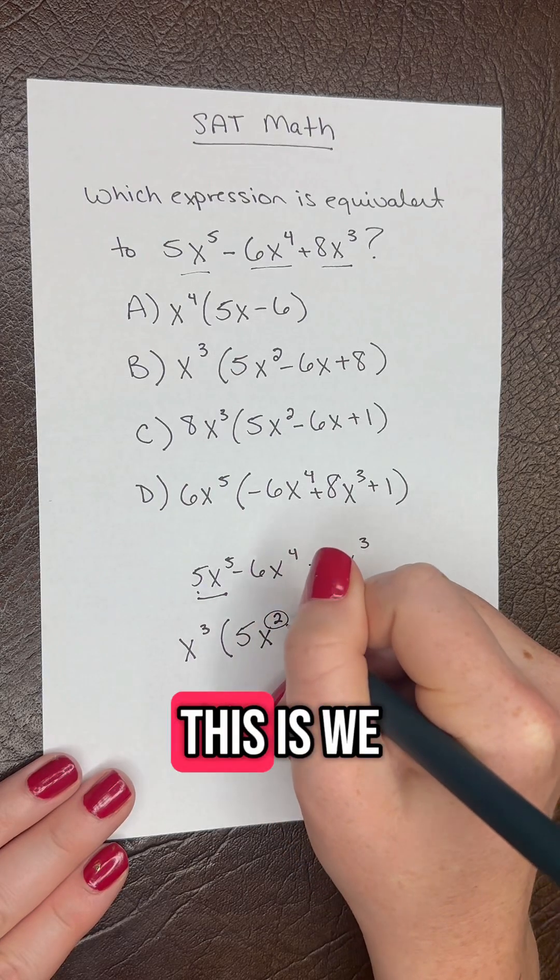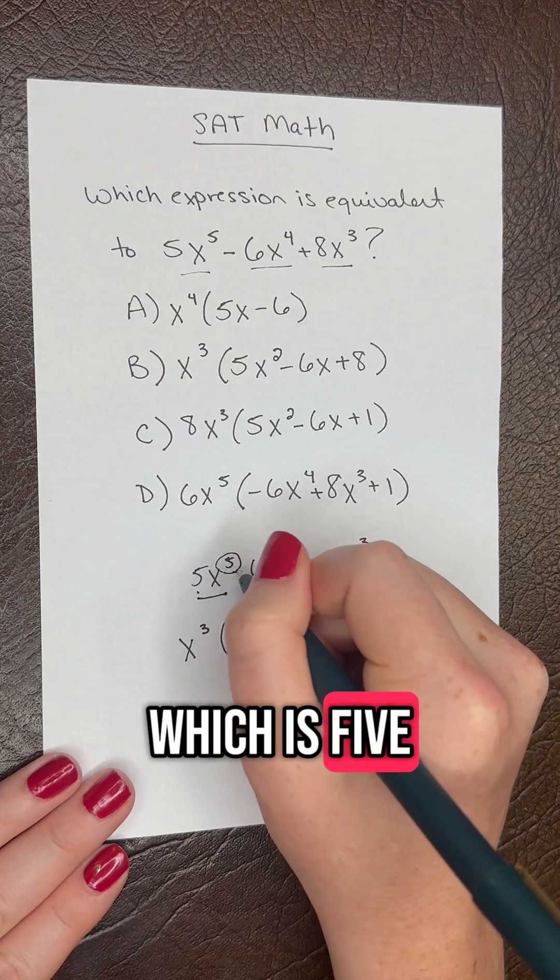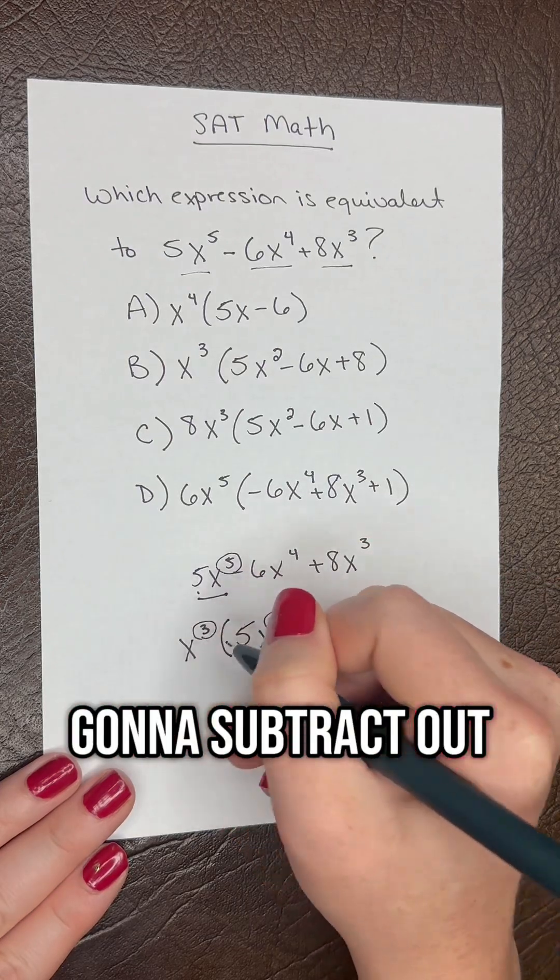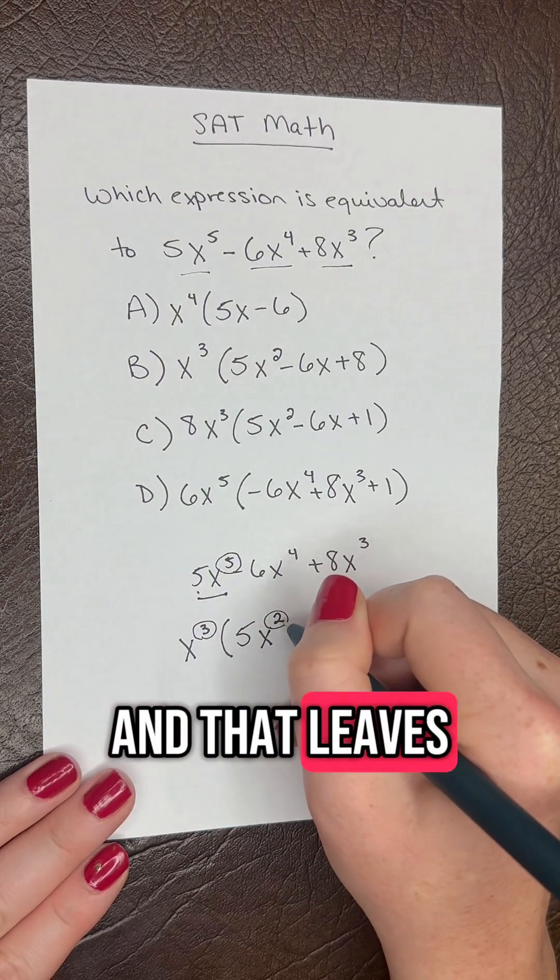And the way that we get this is we look at this exponent which is five here, and we're going to subtract out the three that we're taking out, and that leaves us with the two there.